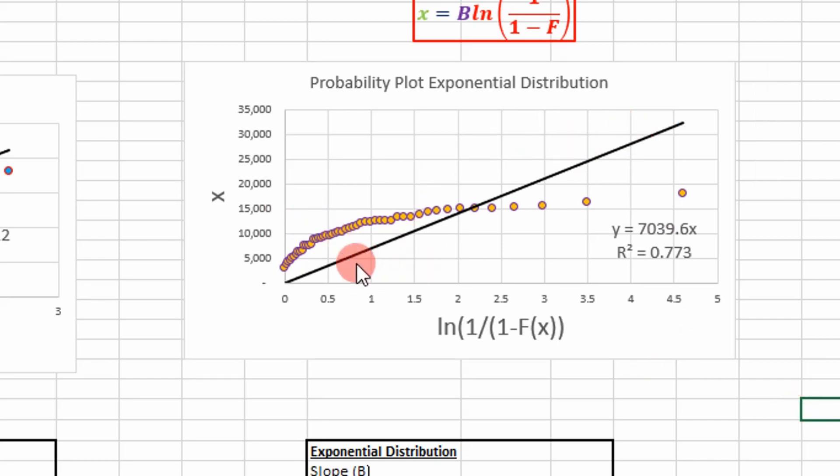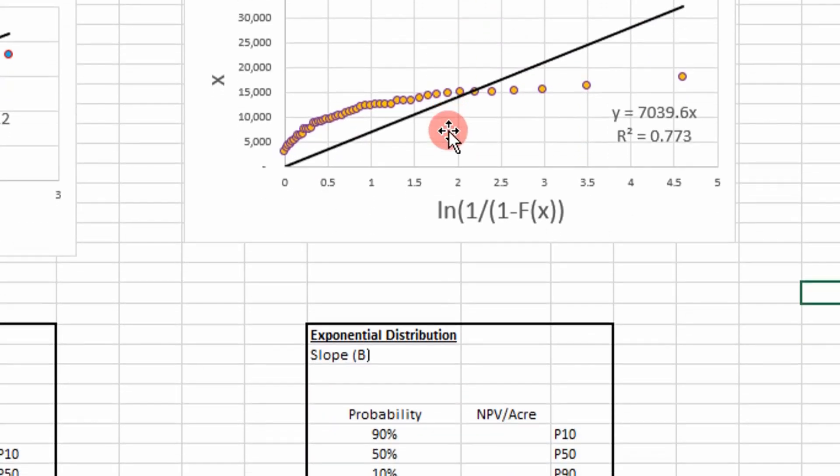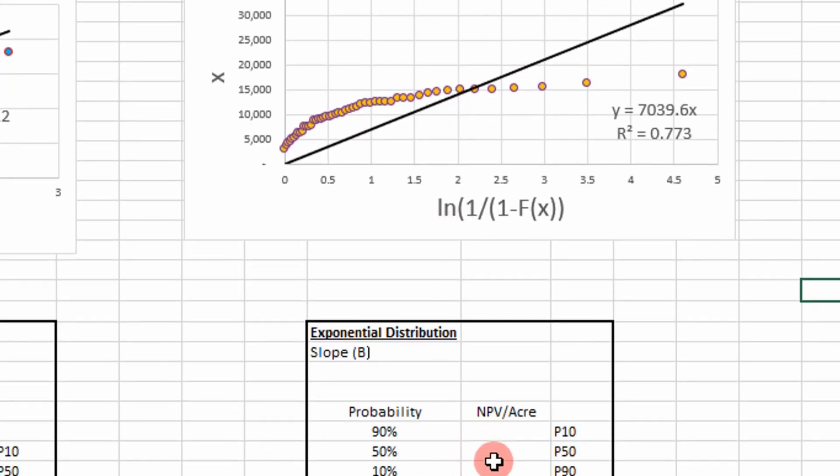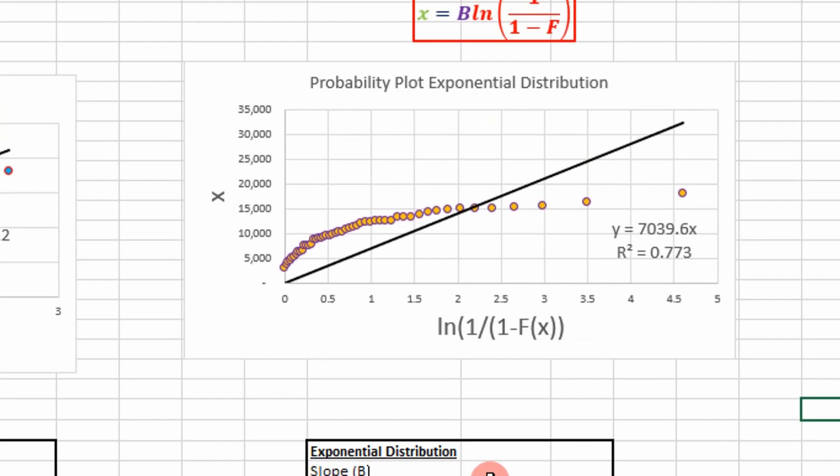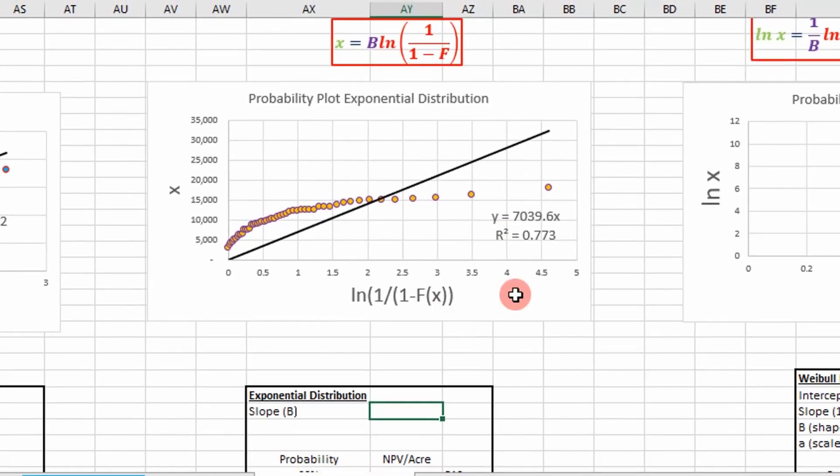Now we're going to use this equation of our straight line that we fit our data to using linear regression and determine our P10, P50, and P90. To get the slope value here, we can either use this value up here or we can calculate it.